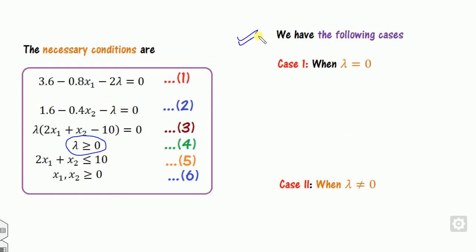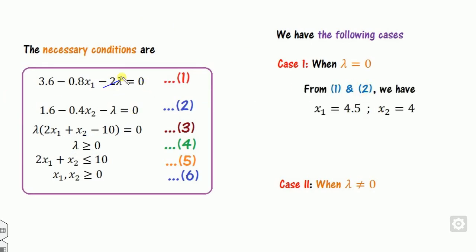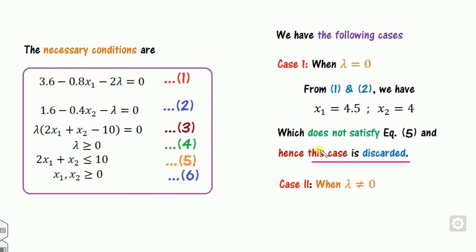Case 1: λ = 0. From equations 1 and 2, we find x1 = 4.5 and x2 = 4. Checking whether this satisfies all six equations — 2(4.5) + 4 = 13, which is not less than or equal to 10 — so equation 5 is not satisfied. Hence this case is discarded, meaning λ must be non-zero.